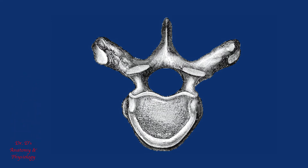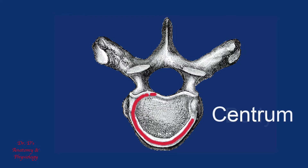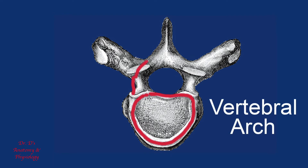This begins a series of videos on the vertebral column, and I'd like to begin by first talking about the basic structure of the vertebra. The two most basic components of the vertebra that you need to understand are the body, which is also referred to as the centrum, and the vertebral arch, which is also referred to as the neural arch.